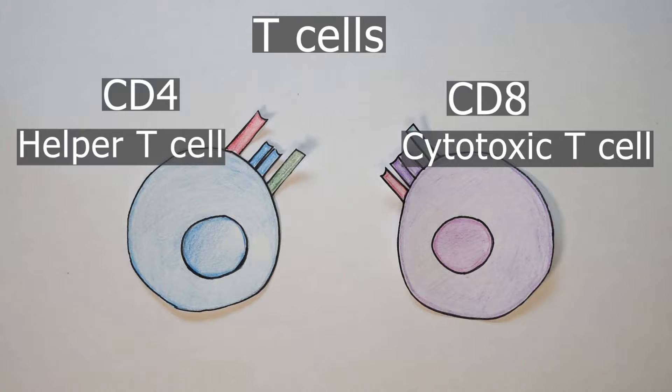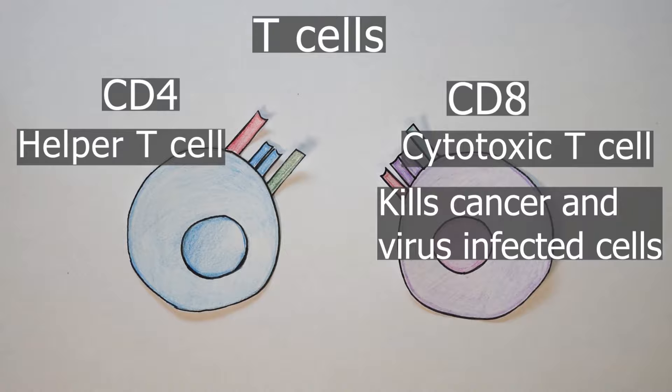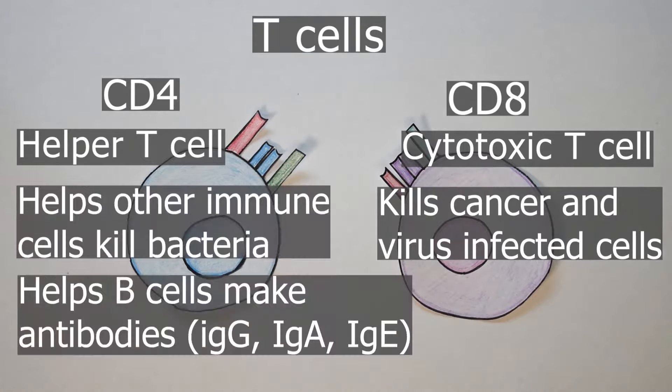They can destroy a cell that either has cancer or is virally infected. Helper T cells mostly help macrophages do their job better. It helps them break apart and grab bacteria. It also helps B cells turn into plasma cells and crank out tons of antibody, particularly IgG antibody.